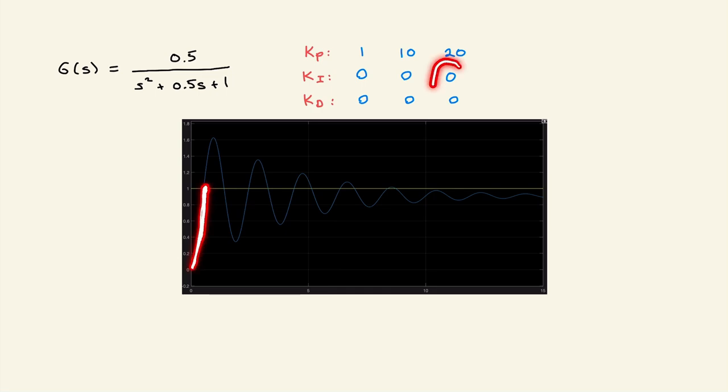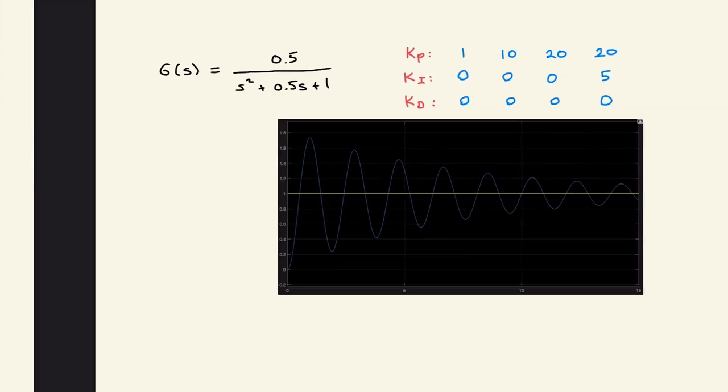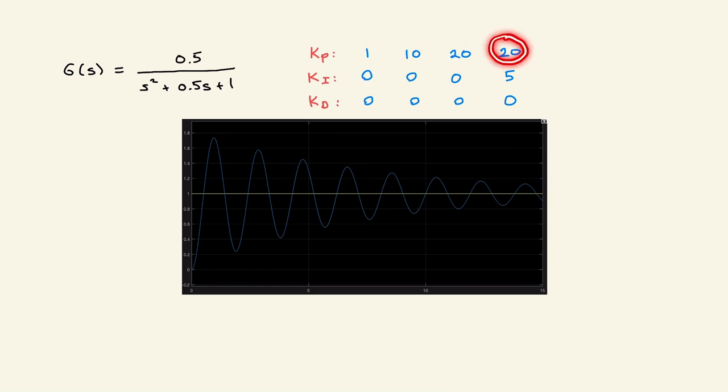Once you achieve this, I'm going to start playing with other terms. The first term that I'm going to play is integral gain, because I would like to track this command here. I cannot track. If you run this simulation further than 15 seconds you are going to see you cannot track. Now while keeping Kp 20, I increased Ki to 0.5.